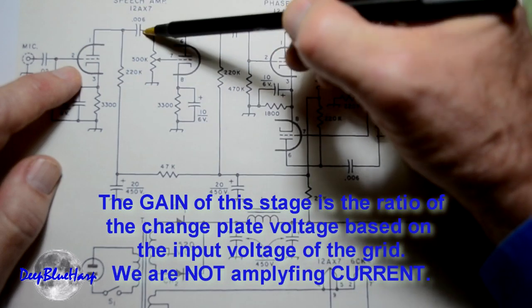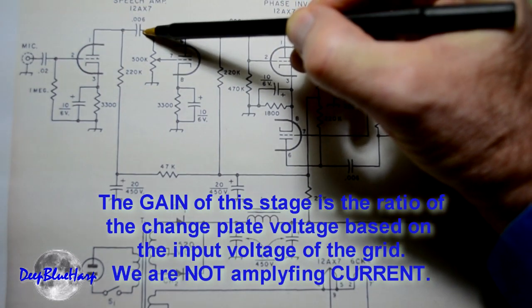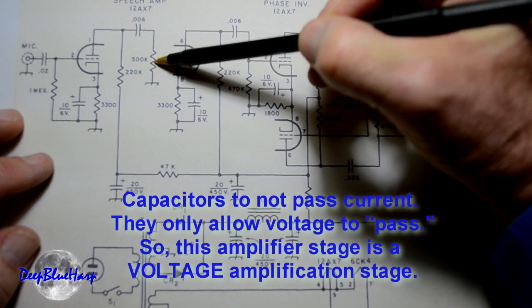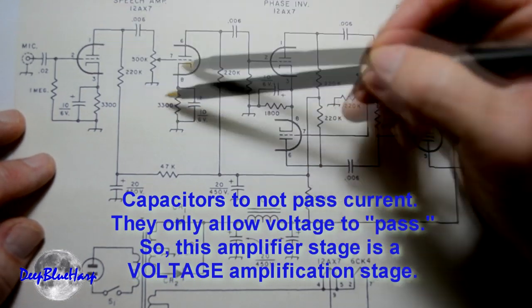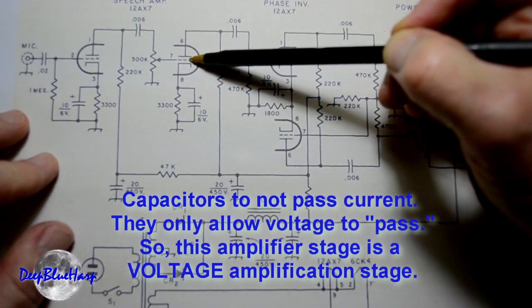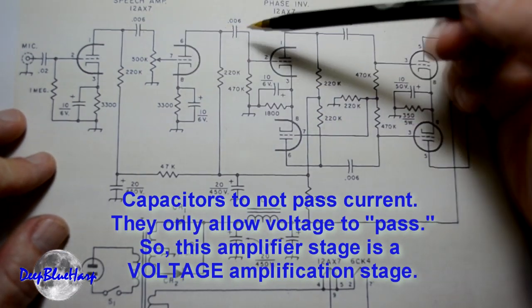From there, there is a blocking capacitor. This again, no currents going through. Gain adjust. The plate goes to the grid of the next stage. This is the next stage.